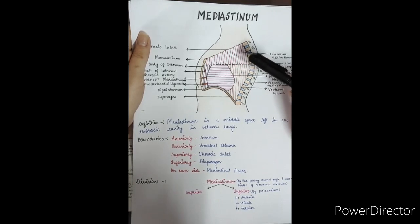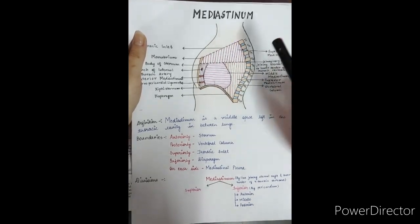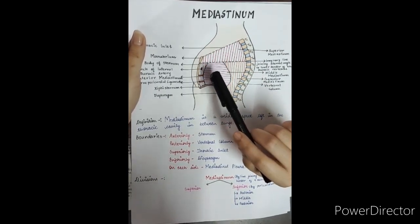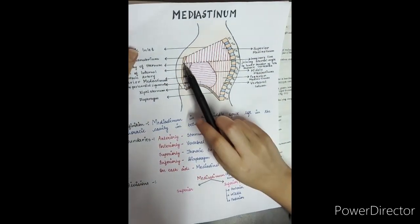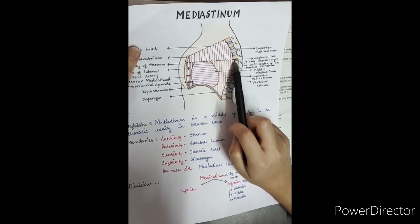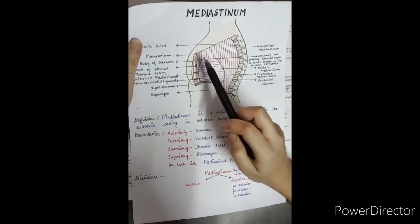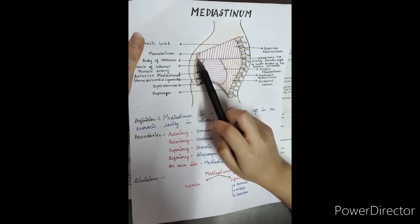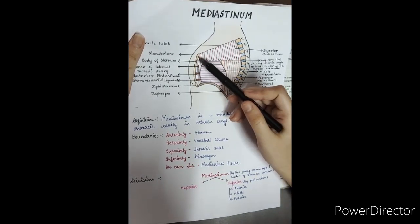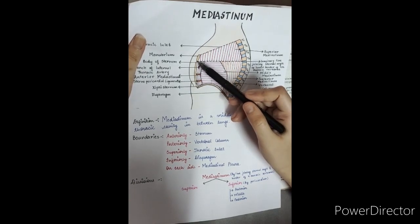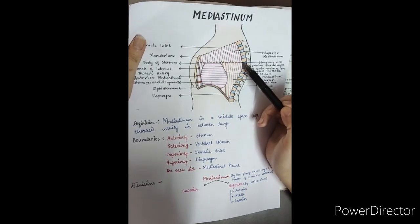Mediastinum is divided into two parts: one is the superior mediastinum and one is the inferior mediastinum. Mediastinum is divided by an imaginary line joining the sternal angle to the lower border of the fourth thoracic vertebra. The sternum has three parts: the manubrium sternum, the body of sternum, and the xiphisternum. The junction of the manubrium sternum and body of sternum is called the sternal angle. This line runs from there to the lower border of the fourth thoracic vertebra.